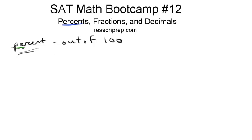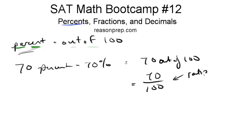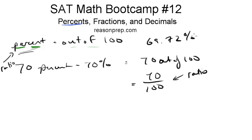You can think about it this way: 'per' means 'for every' or 'out of,' and 'cent' — as in century — is the prefix for 100. So percent means out of 100. If I say 70%, I just mean 70 out of 100, which is just 70 over 100 as a fraction. Percent is really just a ratio — a quick, easy way of talking about a ratio. We say 70% instead of '70 out of 100' every time, and it especially helps with decimals like 69.72%.